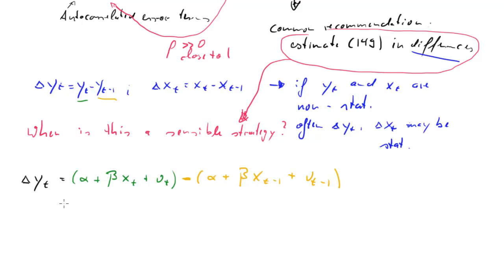Now let me go back to black. Yellow isn't very visible. What we can see is that the alpha cancels out. And we have two terms with beta. And we have one xt and then minus xt minus 1. And then we have ut minus ut minus 1. And of course, given our definition for delta yt, we know that this guy here is just delta xt plus ut minus ut minus 1. So that is equation 151 on the lecture slide.